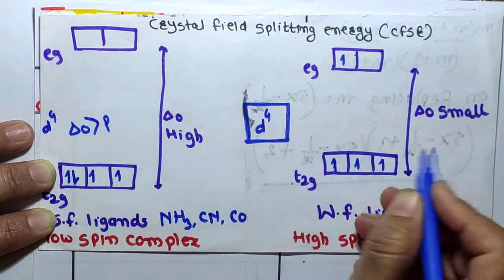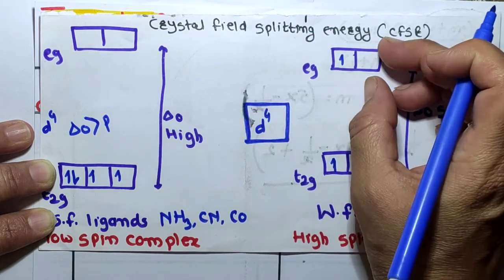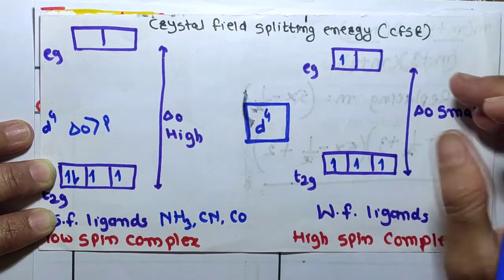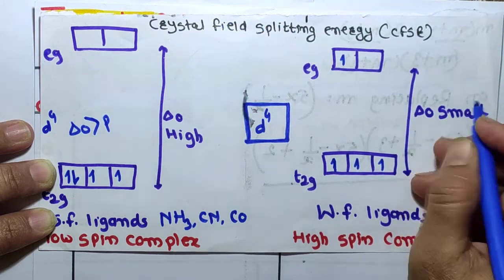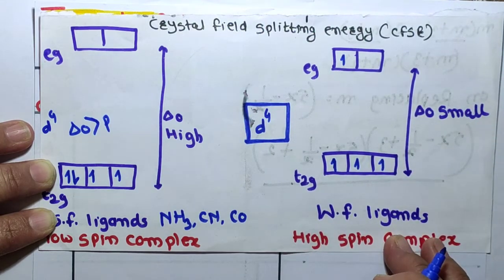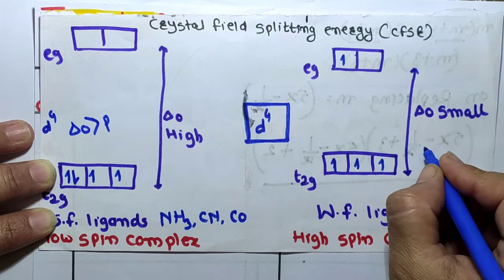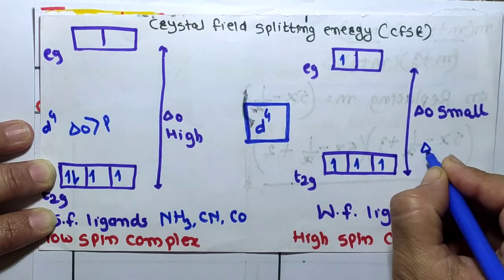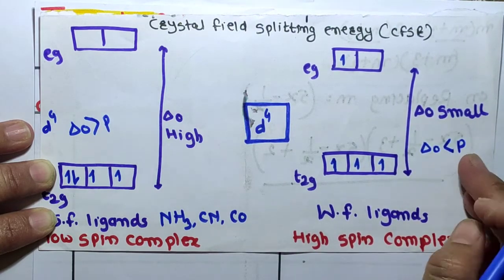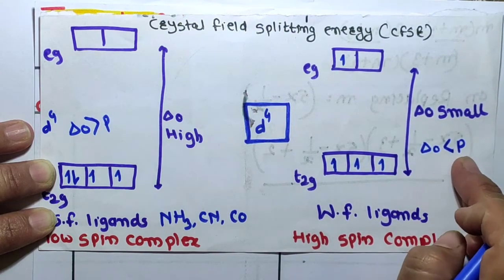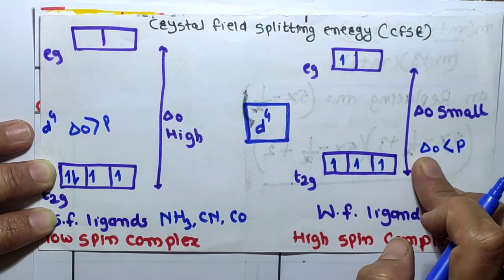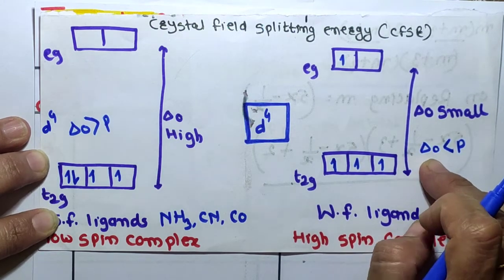In weak field ligands, electrons fill up in both the t2g as well as the eg levels because delta O is small. In weak field ligands, delta O is less than the pairing energy P, meaning pairing energy is greater and the octahedral splitting energy is lower.